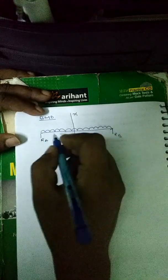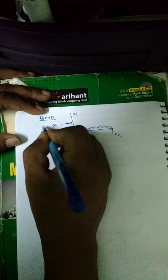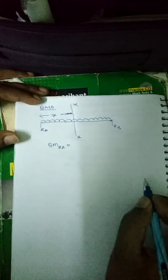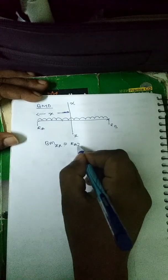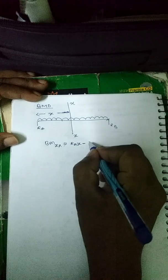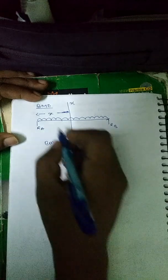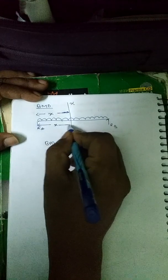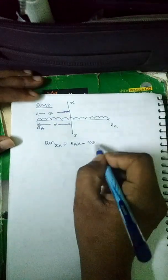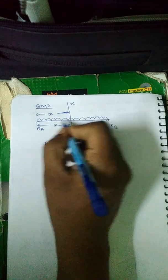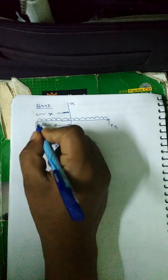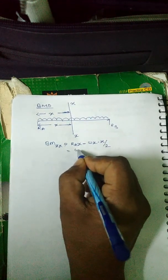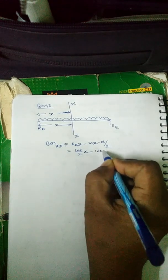For the bending moment diagram, we take section XX at a distance x from the left side. The bending moment about XX equals RA times x minus the total distributed weight wx acting through its center of mass at x/2, giving: M = wL/2 · x minus wx²/2.